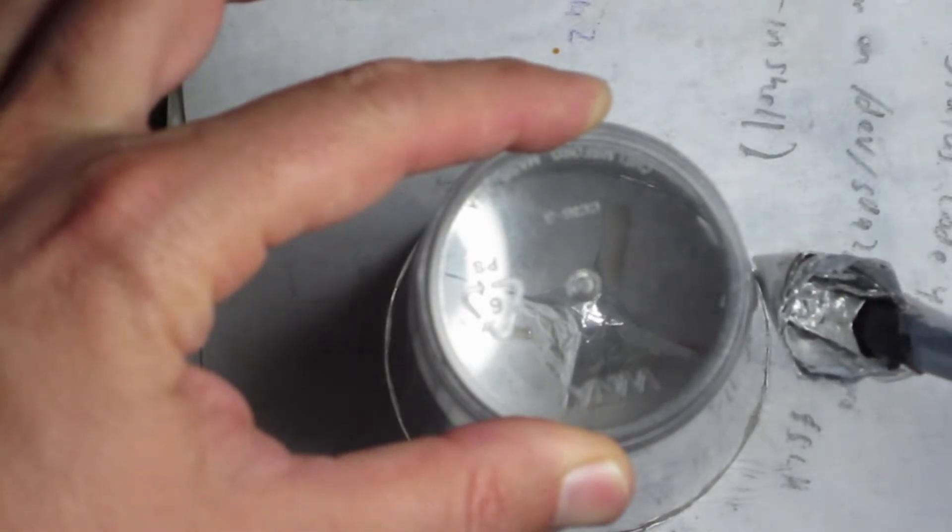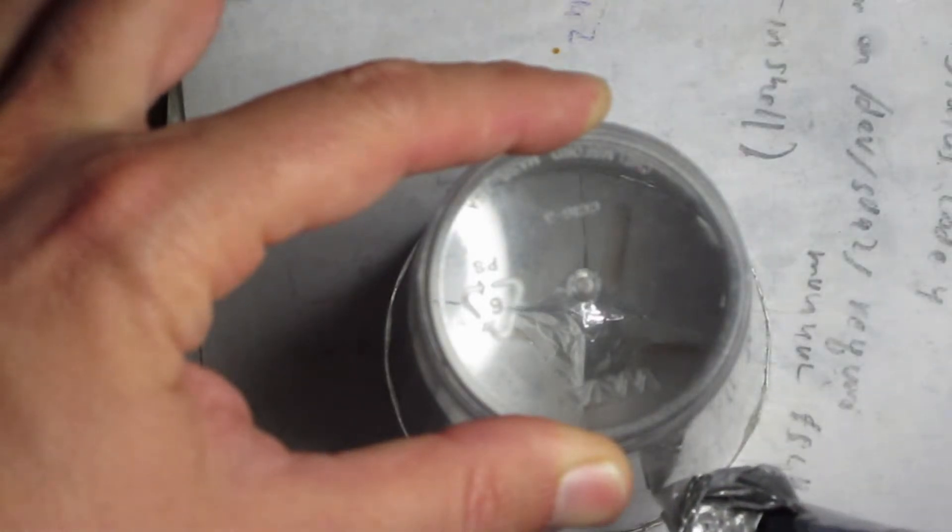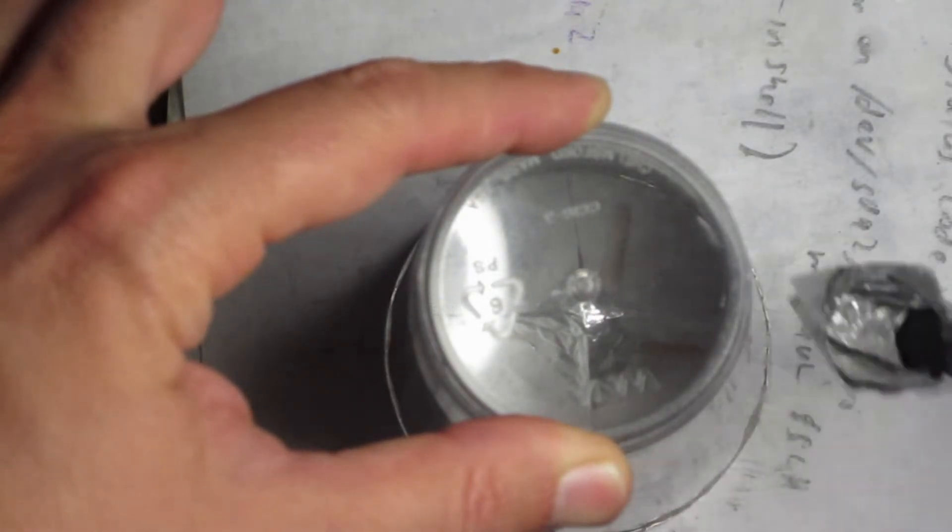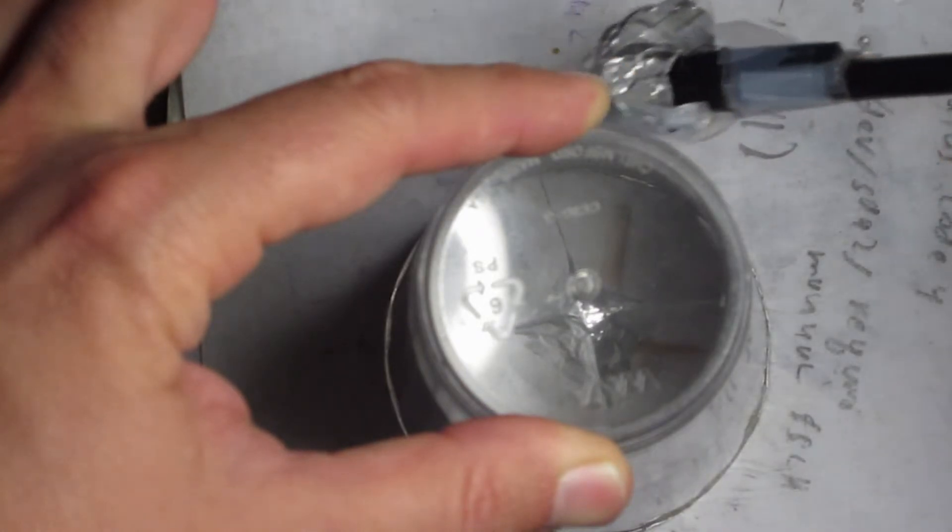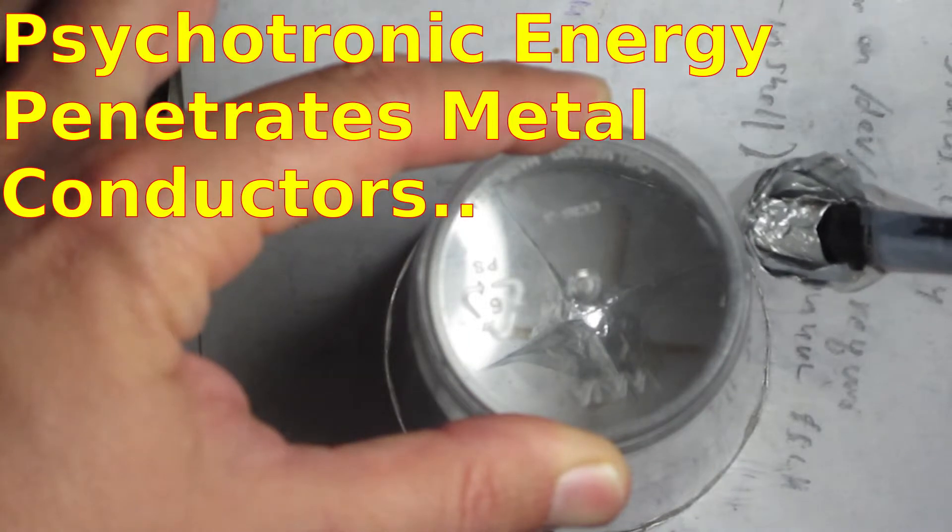Okay, so it's a shielded glass, and I have the generator on the outside here, and it seems to be disturbing the psychotronic energy in the glass, and it penetrates right through the glass to affect the rotor.